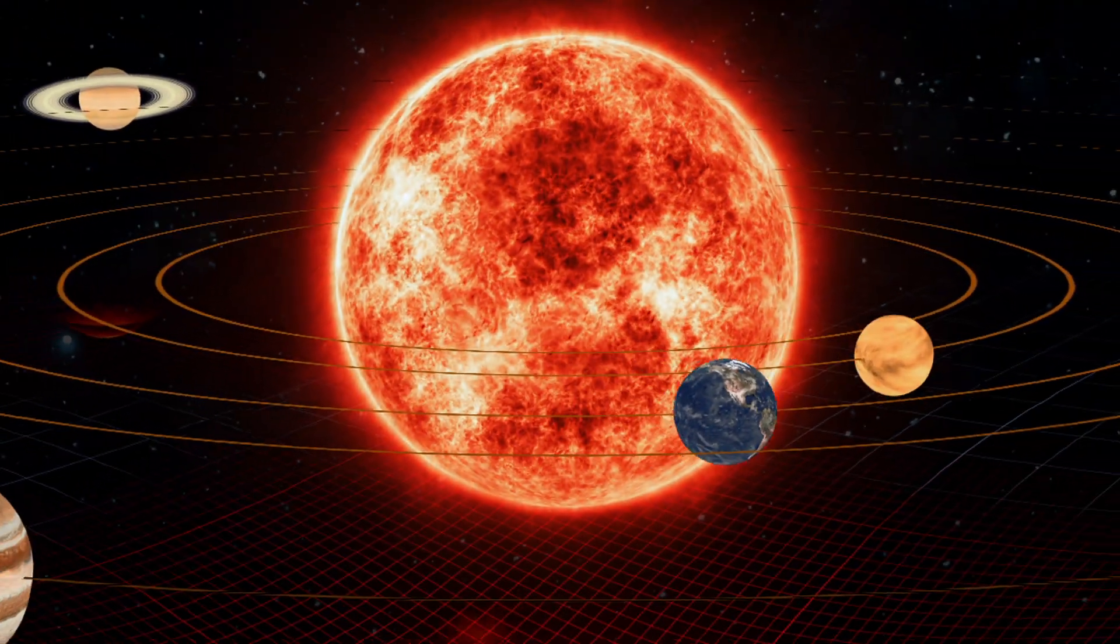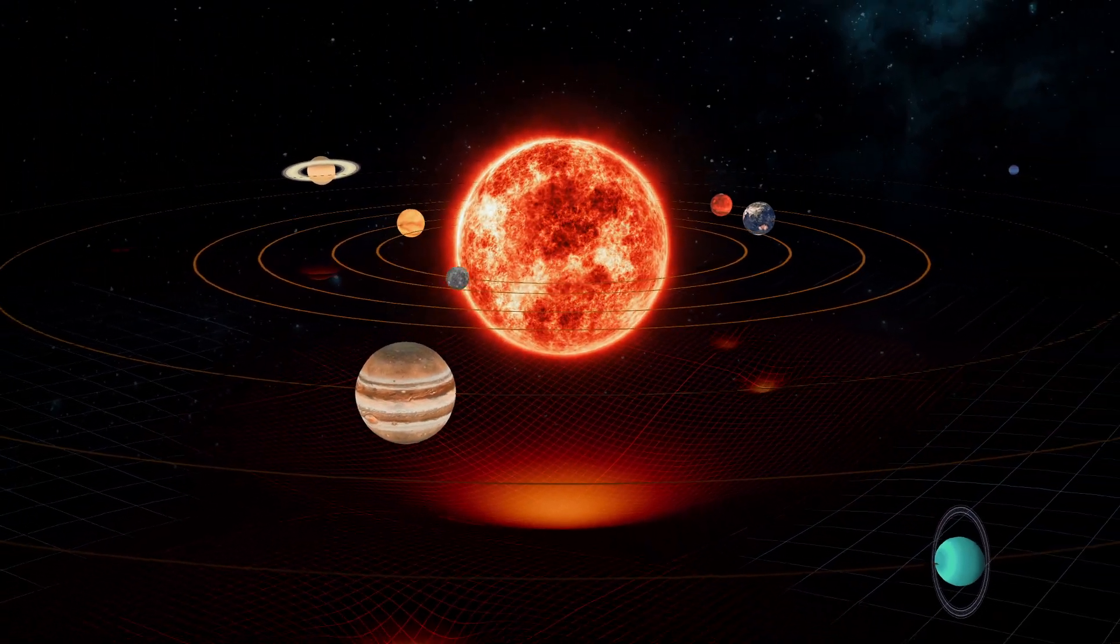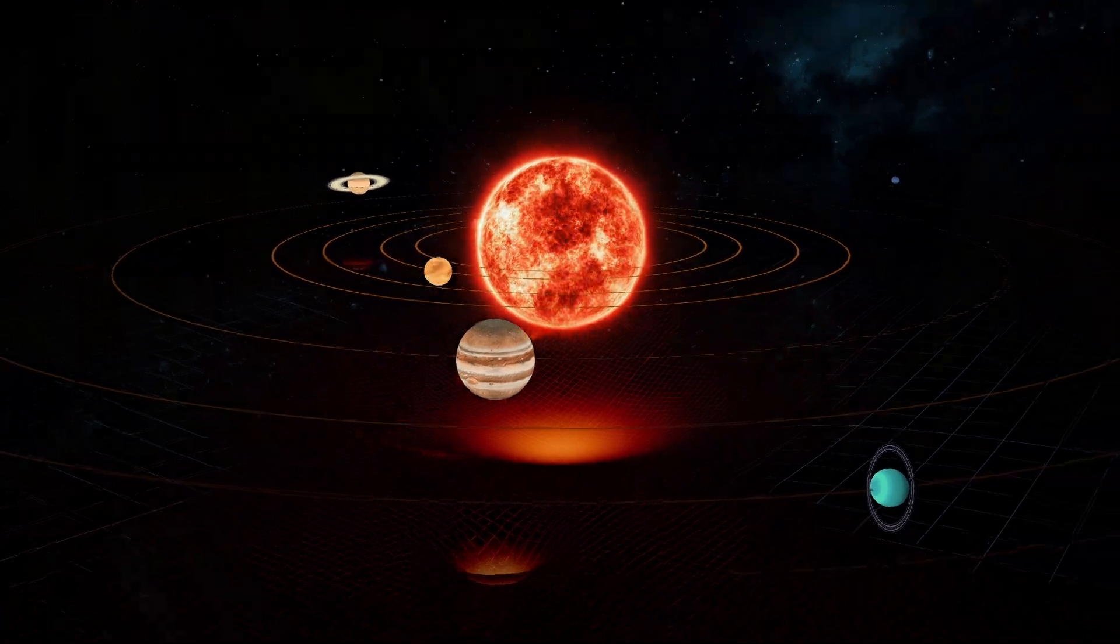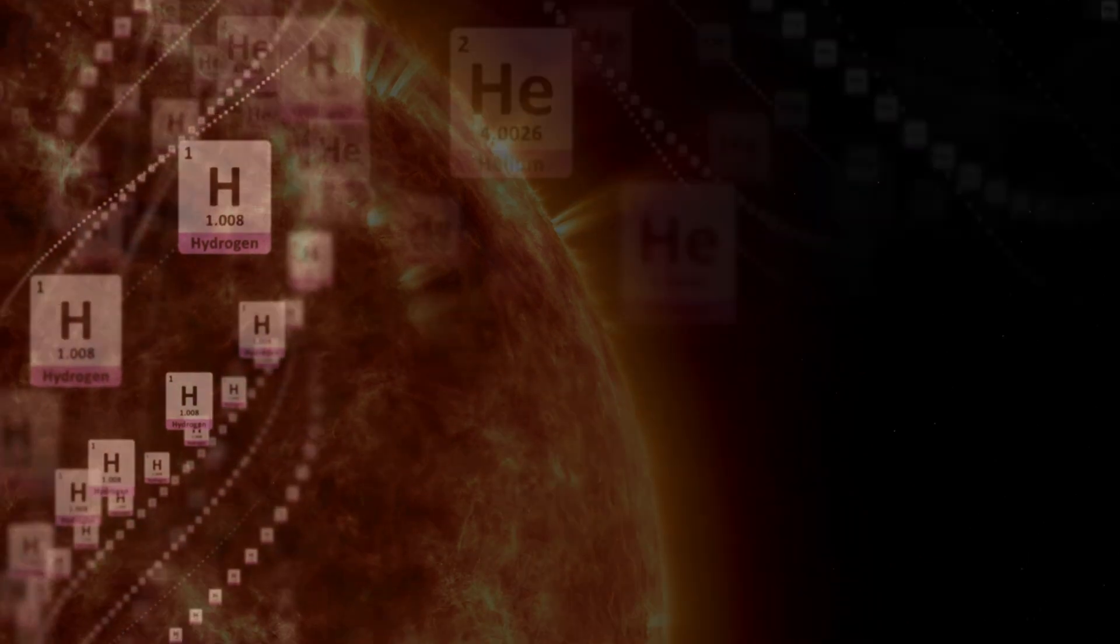The Sun is the center of our solar system, a giant ball of plasma that holds most of the mass of the entire system. Plasma is a state of matter where atoms are so hot that they lose their electrons and become charged particles. The Sun is made mostly of two kinds of atoms: hydrogen and helium.